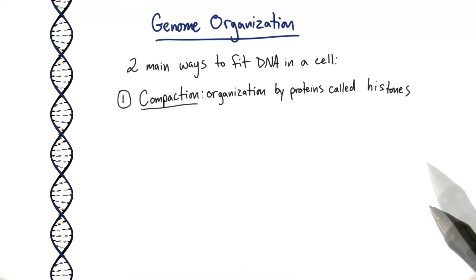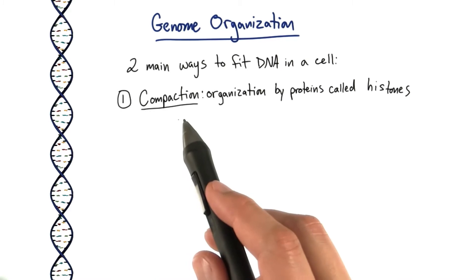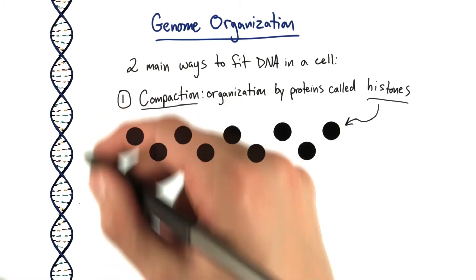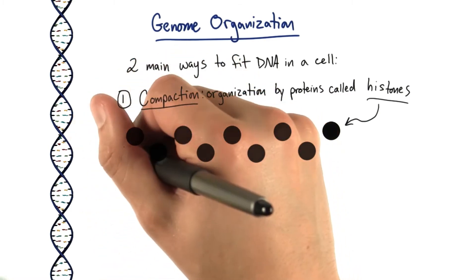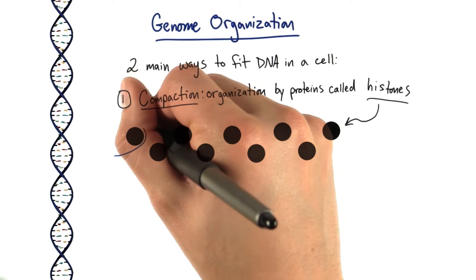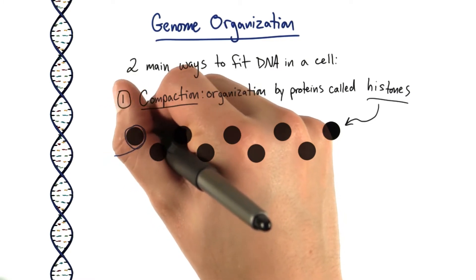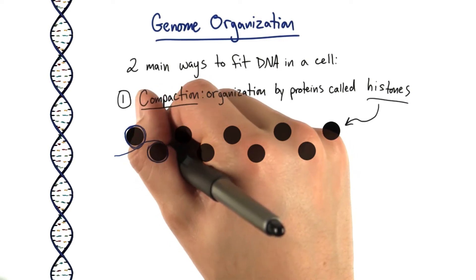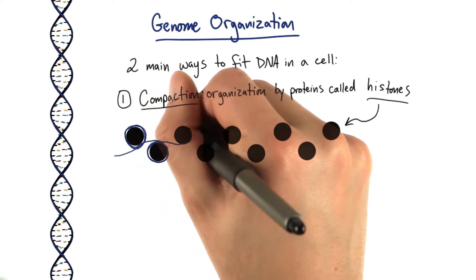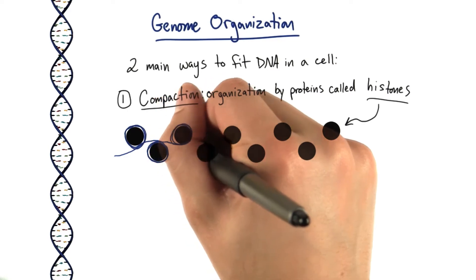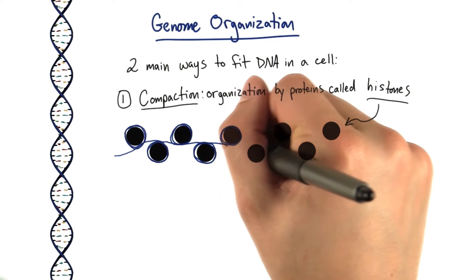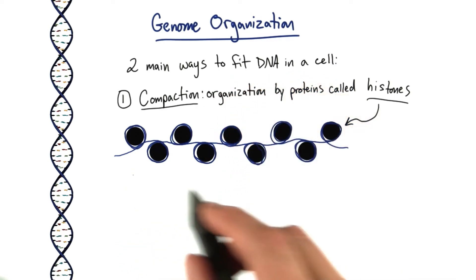For all that DNA to fit in a cell, the two main ways it's organized are first by compaction, meaning organization by proteins called histones. If we zoom out on our DNA strand and imagine our double-stranded DNA is just this one purple line, the first order of organization is that DNA wraps around these histone proteins, much like you might wrap string on a spool, wrapping around and around. This allows for some basic organization.